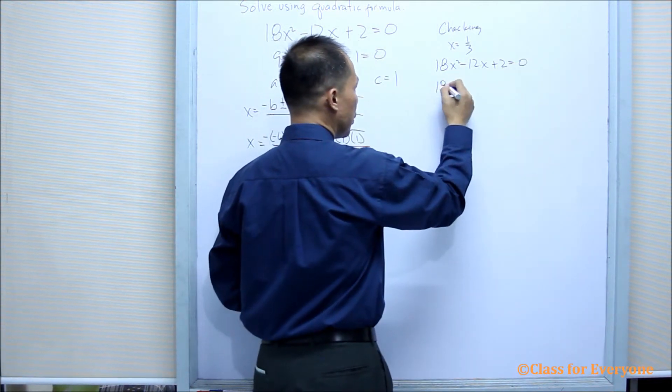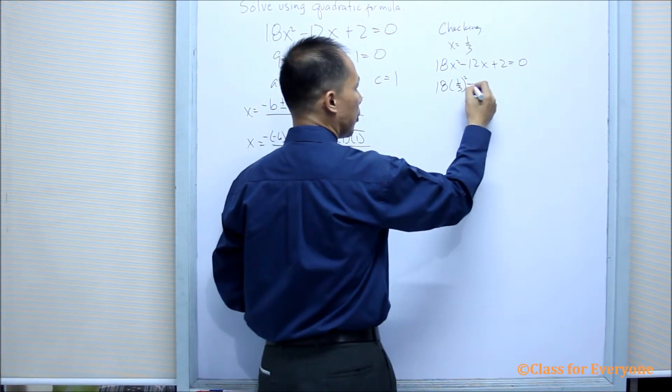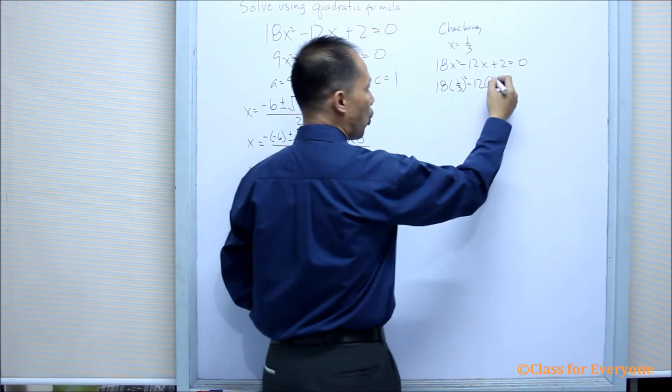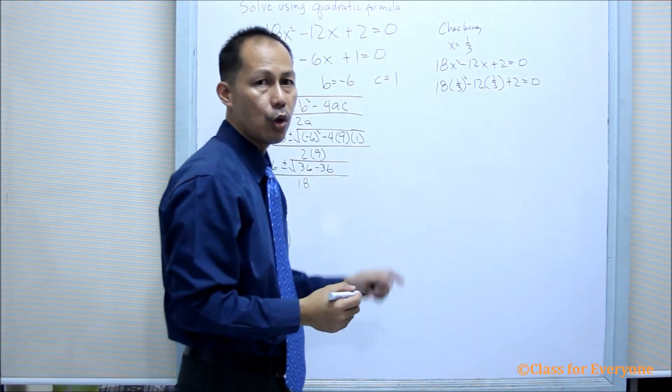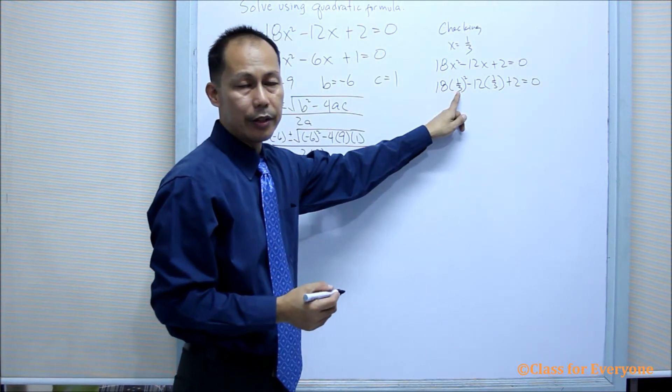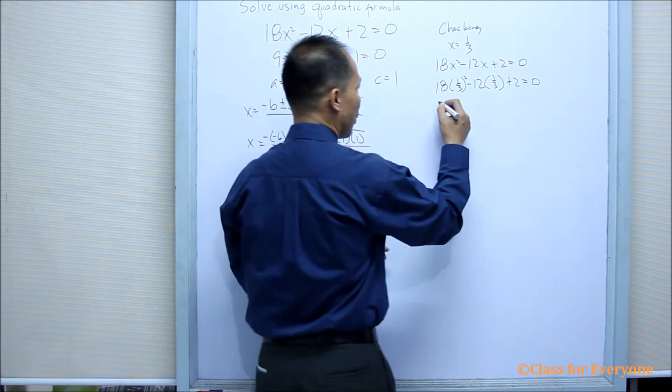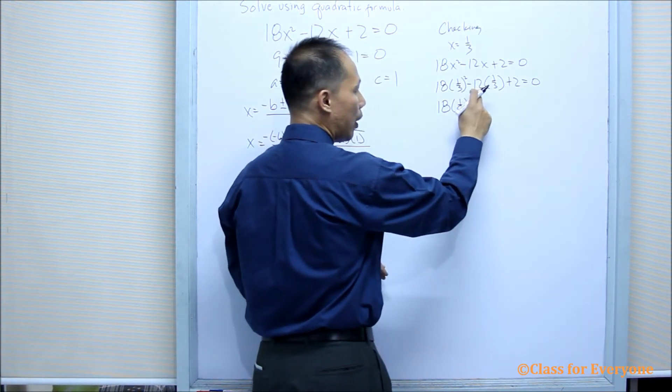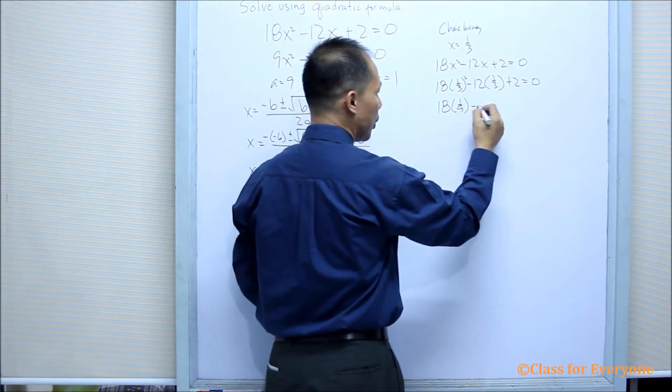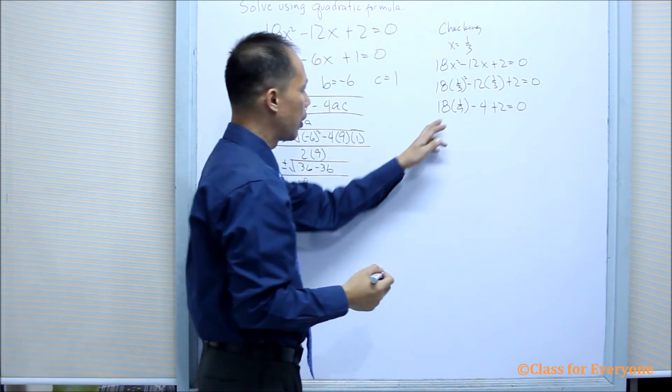By substitution, 18 times 1 third squared minus 12 times 1 third plus 2 equals 0. So we first square 1 third, which will give us 1 ninth. So, 18 times 1 ninth, 12 times 1 third will give us 4 plus 2 equals 0.